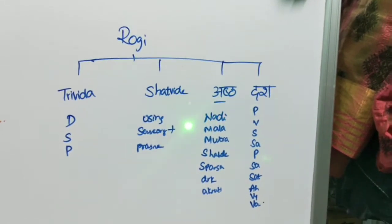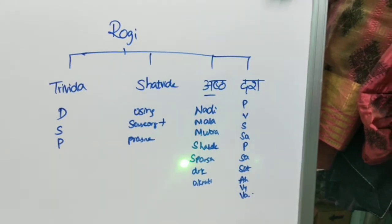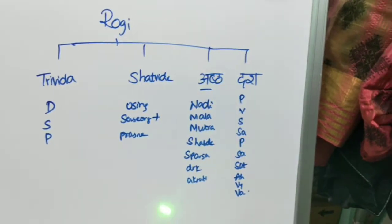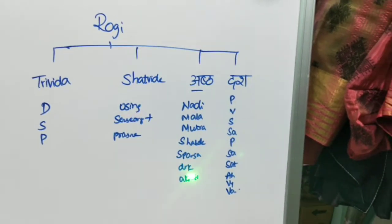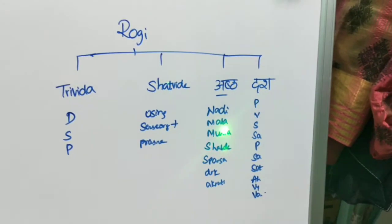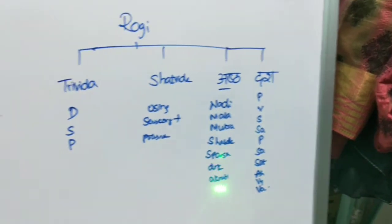Asta Vidha Pariksha consists of: Nadi, Mala, Mutra, Shabda, Sparsha, Druk, and Akruthi. These seven parameters form Asta Vidha Pariksha.